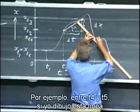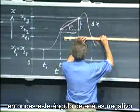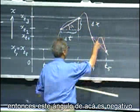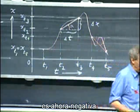For instance, between t4 and t5, if I draw this line, then this angle here is negative, and so the average velocity between t4 and t5 is now negative.